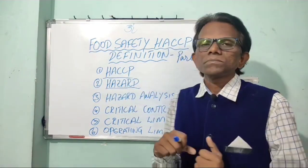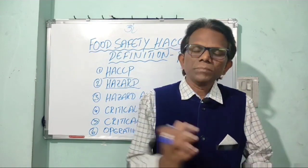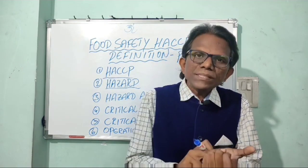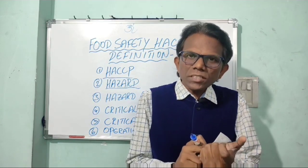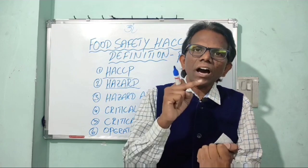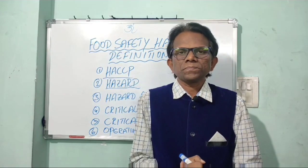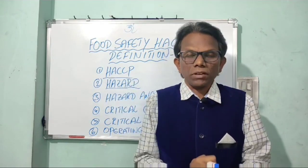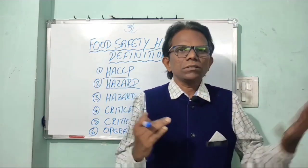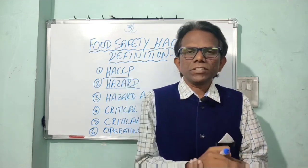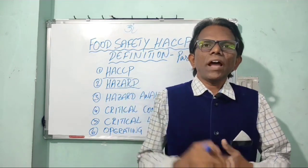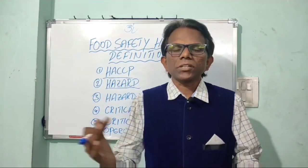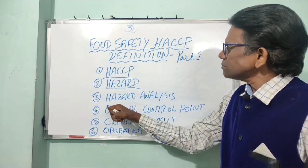The second one is hazard. What is a hazard? A biological, chemical, or physical agent which is reasonably likely to cause illness or injury is called a hazard. For example, biological hazards include most pathogens. Chemical hazards include pesticide residues, drug residues, and allergic materials. Physical hazards include metal fragments and glass fragments in food.